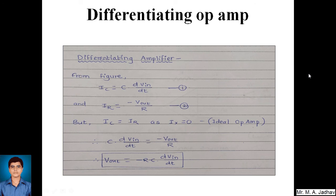We have now covered all five operational amplifiers. The inverting op-amp has gain = −R2/R1; the non-inverting op-amp has gain = (1 + R2/R1). In this presentation we covered the summing op-amp, integrating op-amp, and differentiating op-amp with their respective output voltage expressions. Hope this was understood. Thank you.